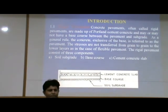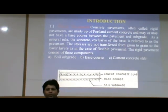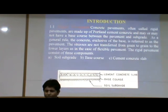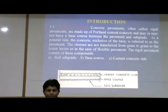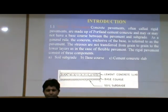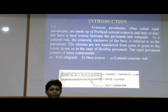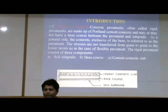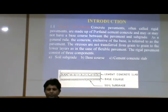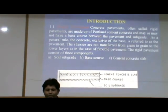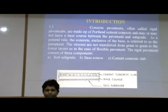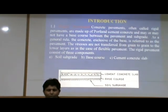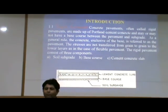The stresses are not transferred from grain to grain to the lower layers as in the case of flexible pavement. The rigid pavement consists of three components mainly: number one, soil subgrade; base course; and cement concrete slab. Soil subgrade means natural soil subgrade, base course means boulders, and cement concrete slab.